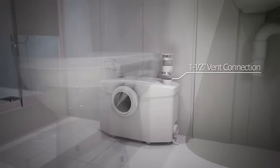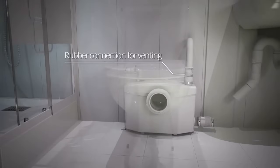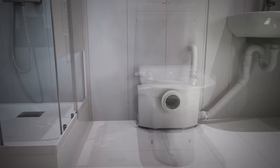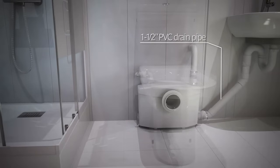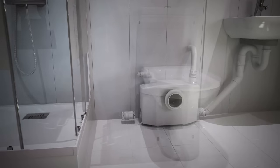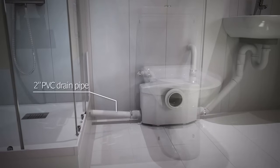Install a vent connection on the macerator using the coupling provided in the installation kit. Connect the drain pipe from the sink to the lower 2-inch inlet on one side of the macerator. Connect the drain pipe from the shower to the opposite side inlet.